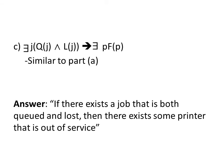Here we have one similar to part A: there exists some J such that Q(J) and L(J) implies there exists some P such that F(P). We have a conjunction where a job is both queued and lost, and there exists some printer that is out of service. So we can translate this as: if there exists a job that is both queued and lost, then there exists some printer that is out of service.